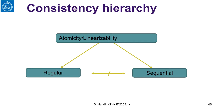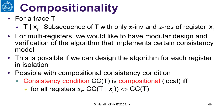Let's talk about properties that are important when we compare sequentially consistent executions with linearizable executions. For this we need some definitions, and we are going to talk about what we call compositionality.